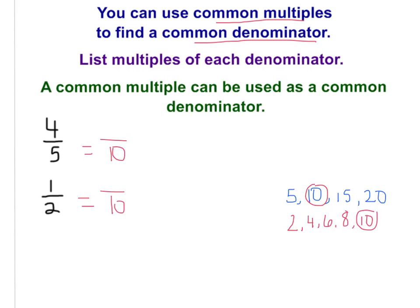One-half has the same value as five-tenths, and four-fifths has the same value as eight-tenths. How did I get that? Because five times two is 10, so four times two is eight. And one-half is the same as five-tenths because two times five is 10, so one times five is five. So my common multiple was 10, and they both have a common denominator of 10. Four-fifths equals eight-tenths, and one-half equals five-tenths.